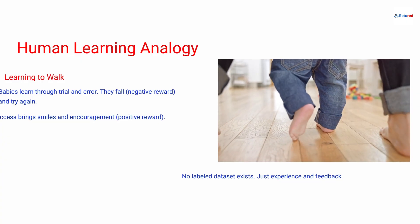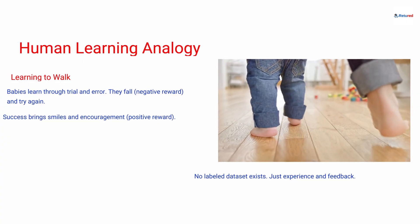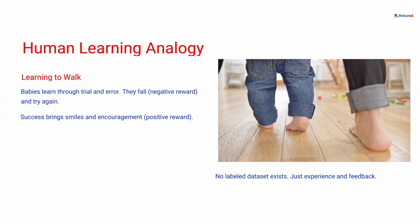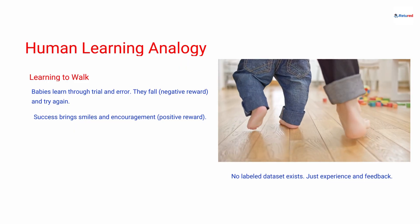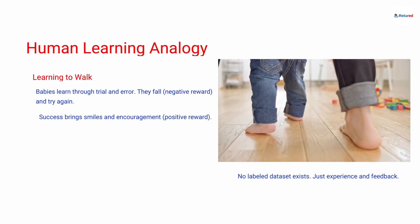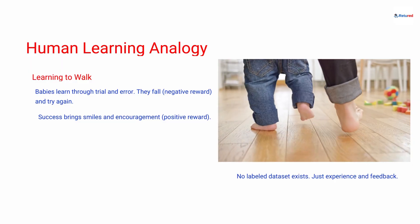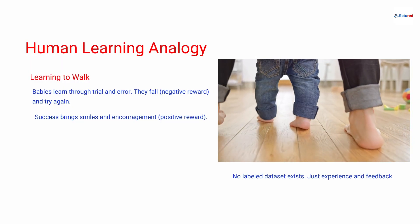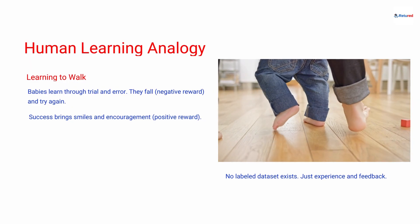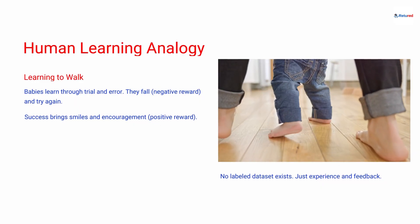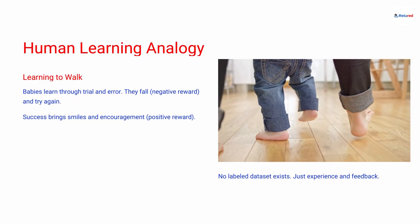Consider how a baby learns to walk. No one hands the baby a labeled guide of correct steps. Instead, the baby tries, falls — a negative reward — and learns to balance with each attempt as it's encouraged by claps and smiles. This trial and error process is exactly what reinforcement learning is all about.